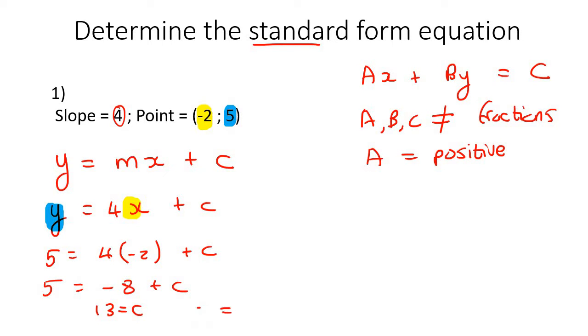So therefore, your final answer, or not the final answer, but the slope intercept form, would be Y equals to, what's our slope? 4X plus 13. Now, from here, that's not the answer. That is called slope intercept form, which is what we looked at in the previous section. Now, we're going to convert that into standard form.